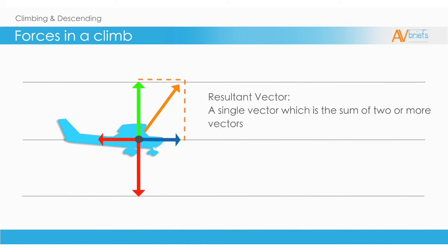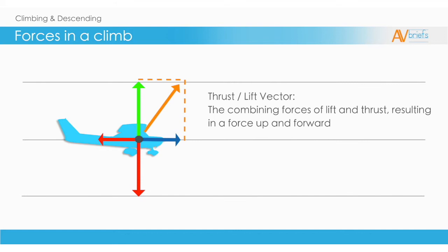A resultant vector is a single vector which is the sum of two or more vectors. The example here shows the green lift and blue thrust. Together they form a single vector which is shown in orange. This can be called the thrust-lift vector.